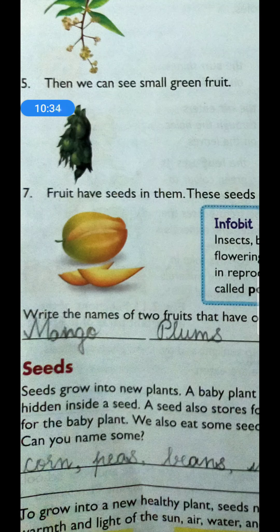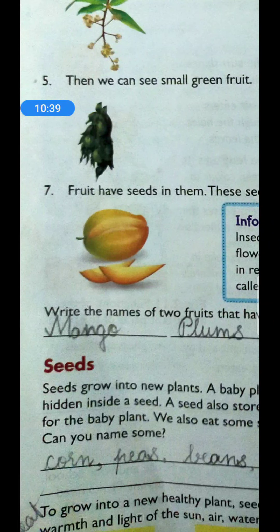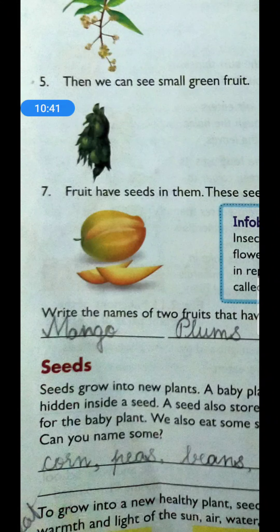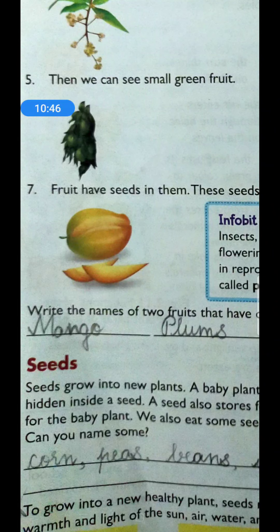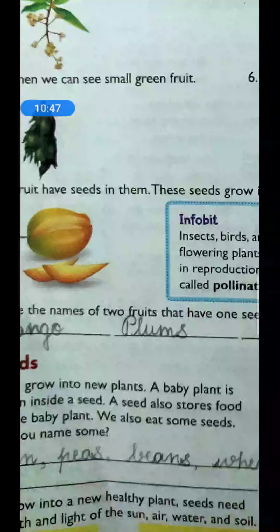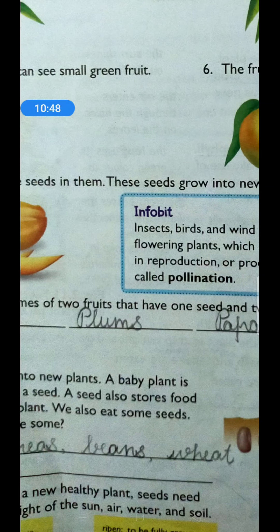We also eat some seeds. Can you name some? Corn — butta — peas, mutter, beans, and even wheat and rice. These are all seeds that we eat.